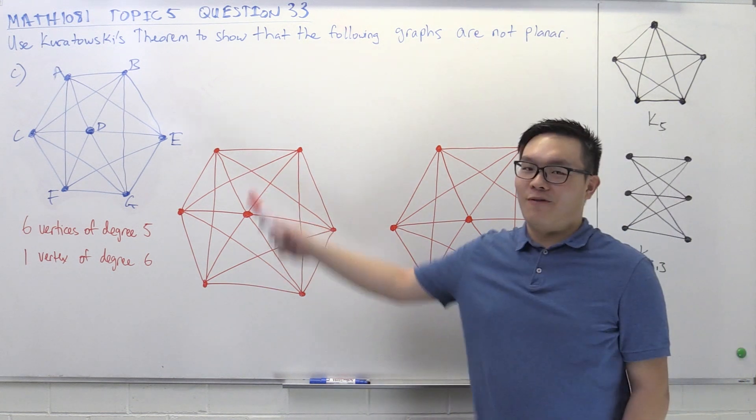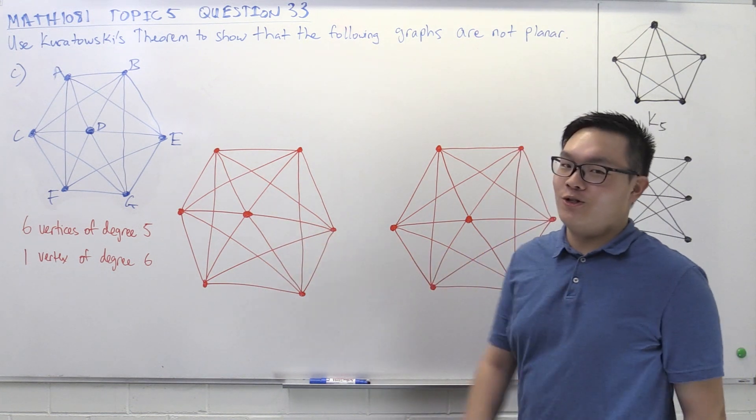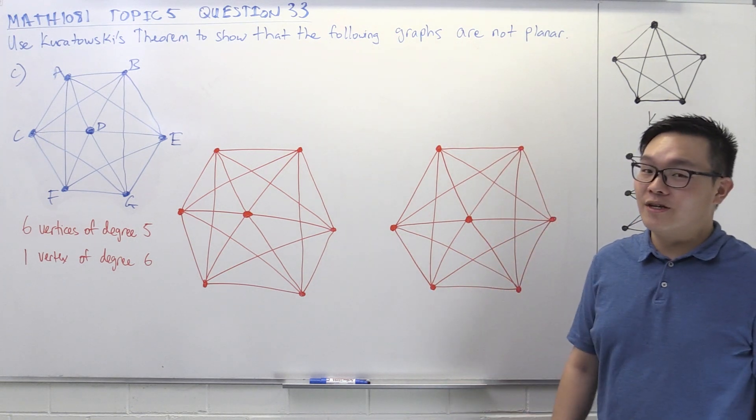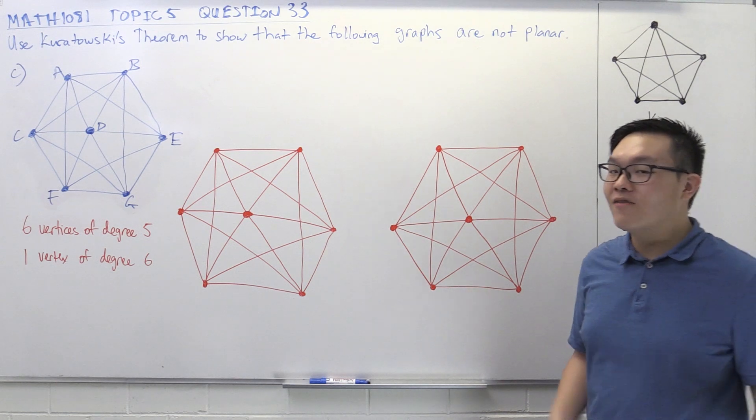Let's have a look at another example. This is the graph in Part C, which we want to show isn't planar using Kuratowski's theorem. So again, the first question we need to ask ourselves is, is it going to end up being K5 or K33?